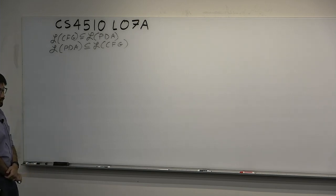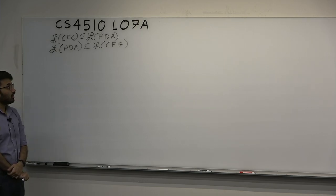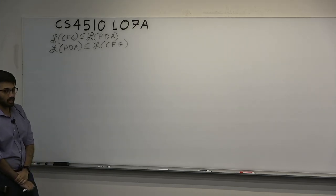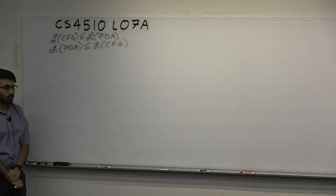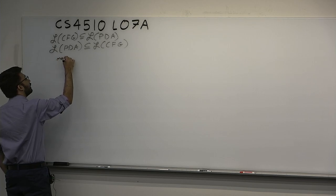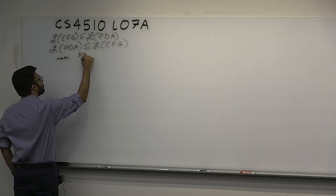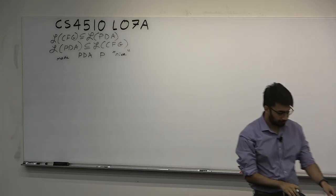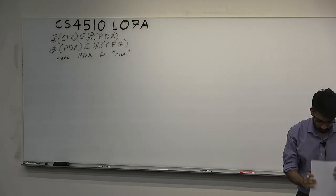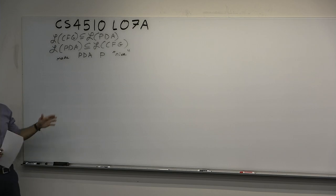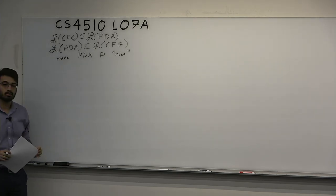Once you finish with that, you can say if a language is context-free, then you can either say there exists a PDA for it or there exists a CFG, whichever one is more convenient. In order to do this, the CFG is kind of more delicate than the PDA, so we need to restrict the kind of forms that we want our PDA to look like to make this simulation work.